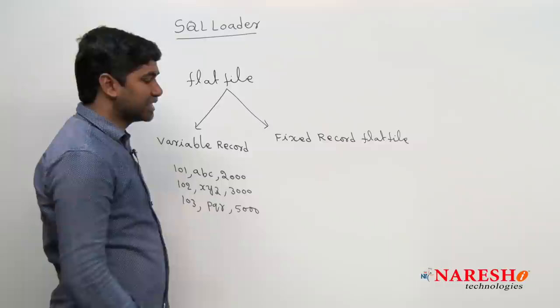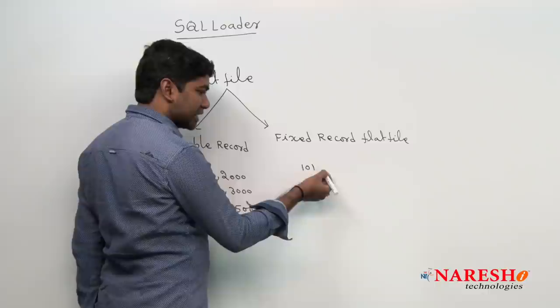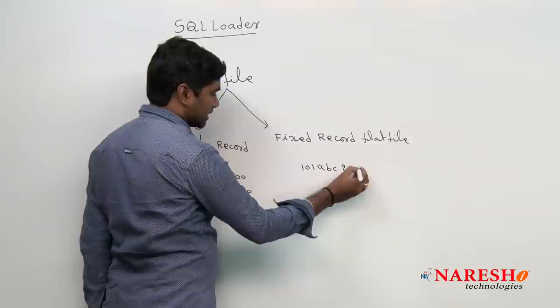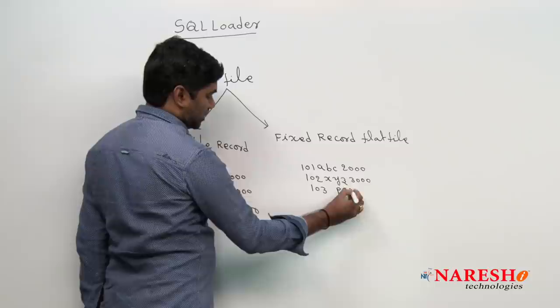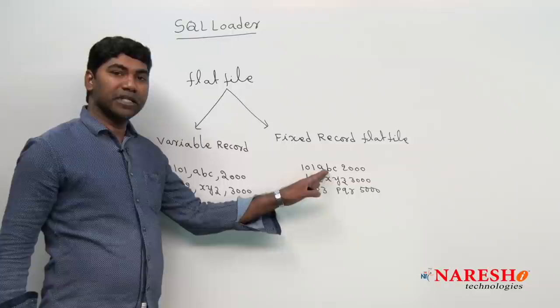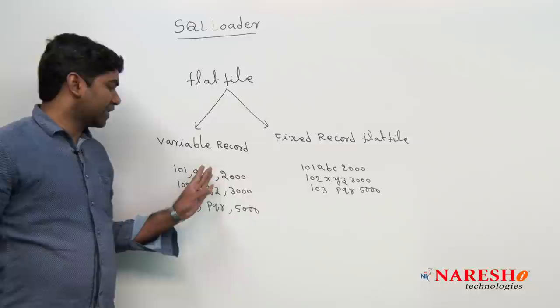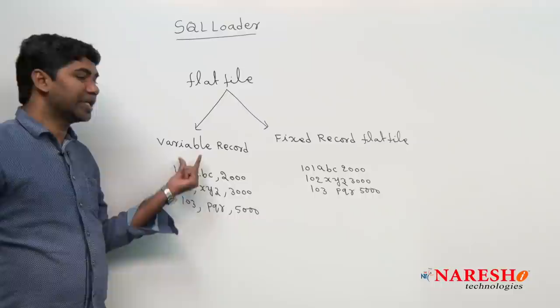For example, in a Fixed Length Record file, the data appears as: 101 ABC 2000, then 102 XYZ 3000, then 103 PQR 5000 — without any delimiter between fields. A flat file which does not have a delimiter between the fields is called a Fixed Length Record Flat File. A flat file which has delimiters or special symbols between the fields is called a Variable Record Flat File.